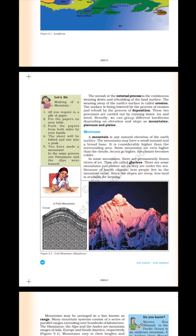Take a look at figure 6.2 — fold mountains, Himalayas, a fold mountain crushed. Let's do 'Making of a Mountain': (1) All you require is a pile of paper. (2) Put the papers on your table. (3) Push the papers from both sides with your hands. (4) The sheet will be folded and rise into a peak. (5) You have made a mountain — in the same process our Himalayas and the Alps were formed.